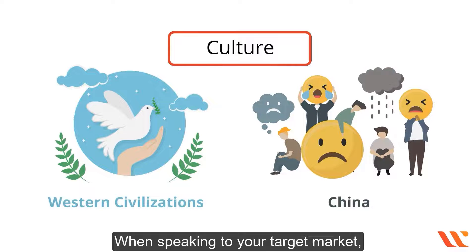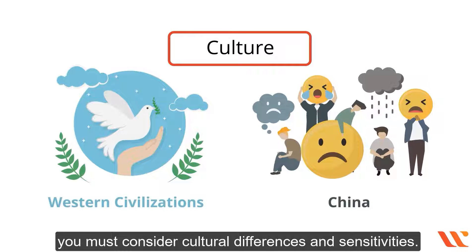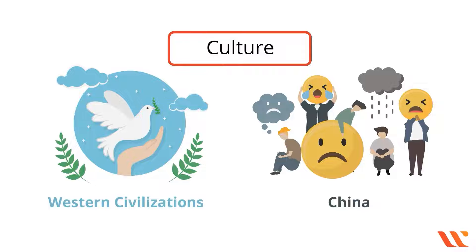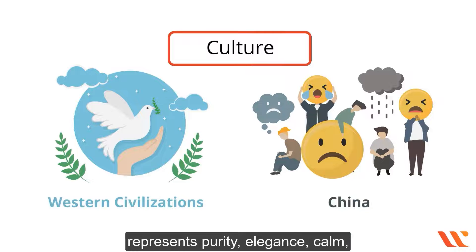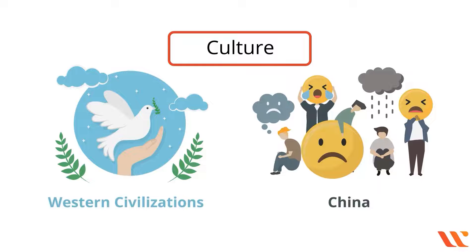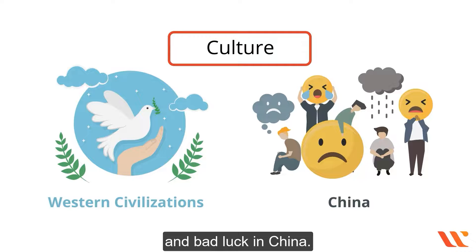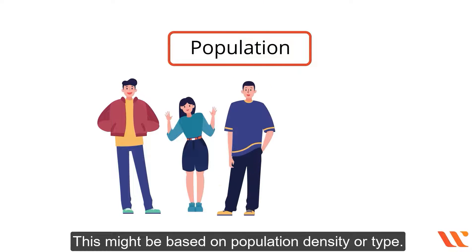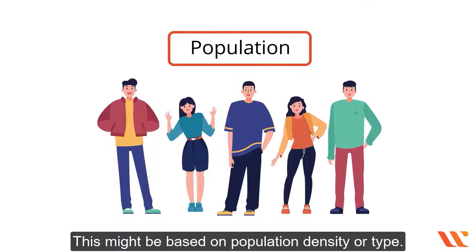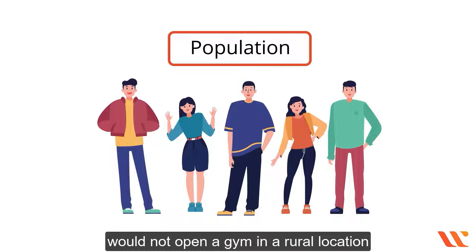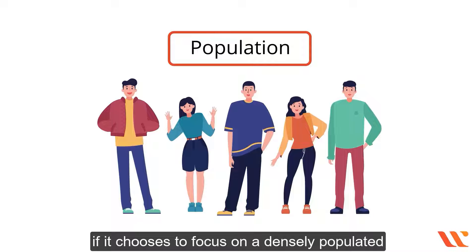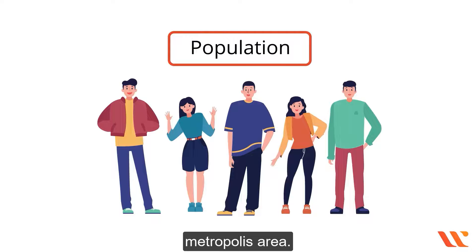Culture is another parameter. When speaking to your target market, you must consider cultural differences and sensitivities. For example, white represents purity, elegance, calm, and cleanliness in Western civilizations, while in China, white is associated with death, mourning, and bad luck. Population is also a factor — this might be based on population density or type. For example, a fitness company would not open a gym in a rural location if it chooses to focus on a densely populated metropolitan area.